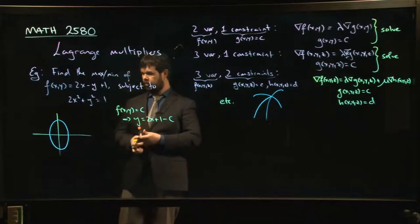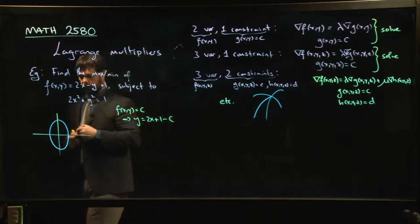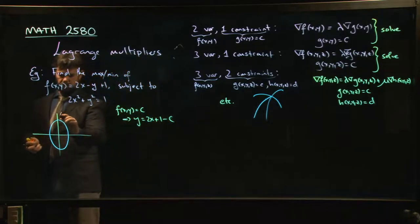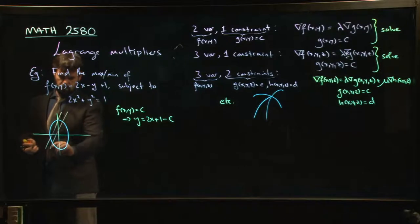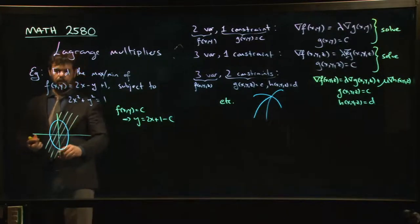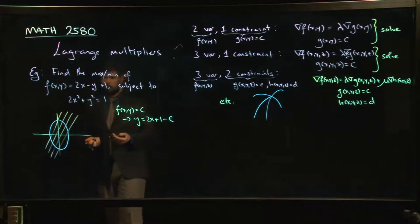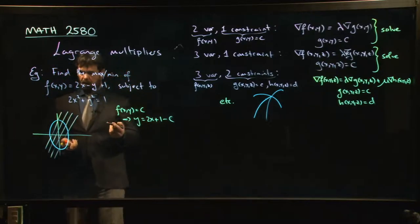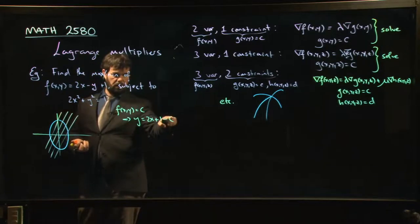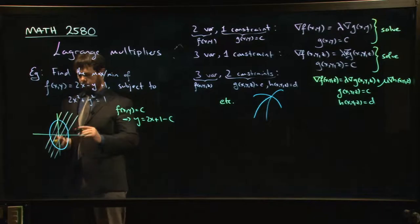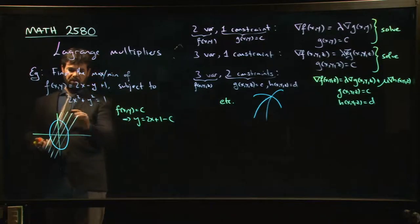So what I'm going to get is I'm going to get lines that look like something like this. There's the level curves for my function f. And the bigger c gets, the further down our intercept is going to be. So these are kind of ordered in increasing c. This is small c, that's big c. And so we keep making c bigger and bigger.